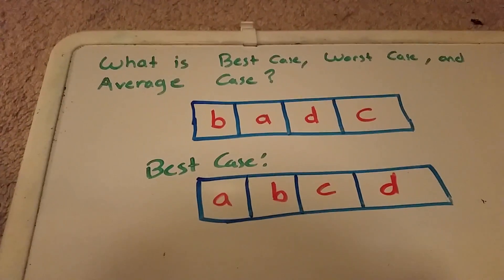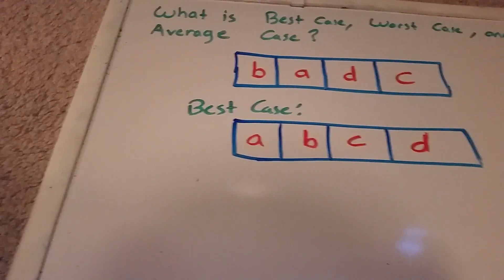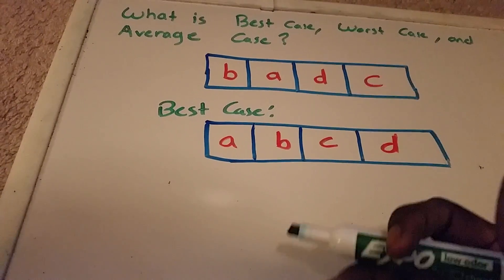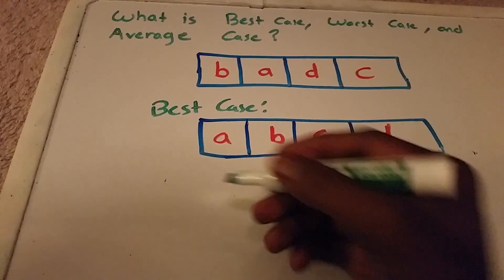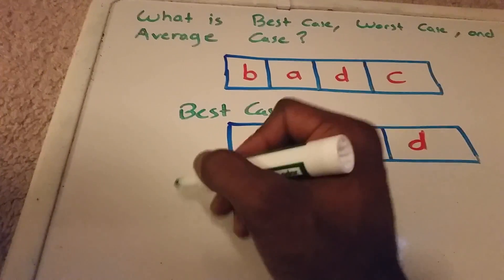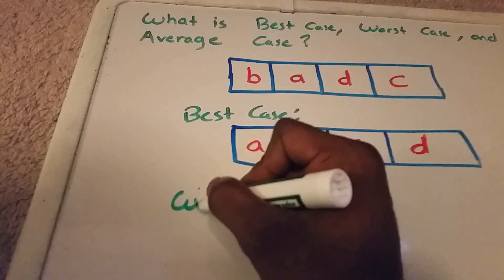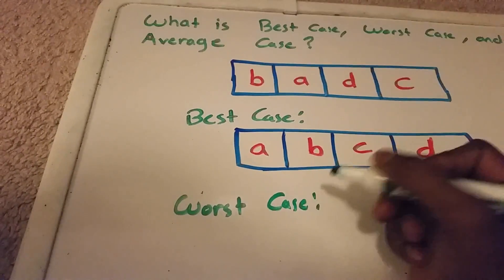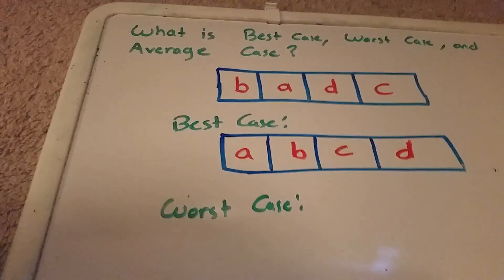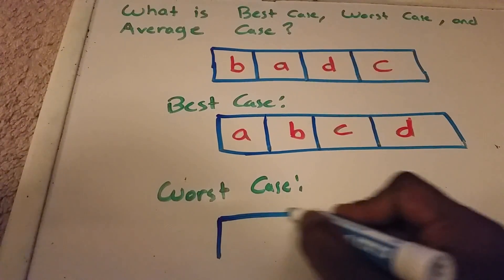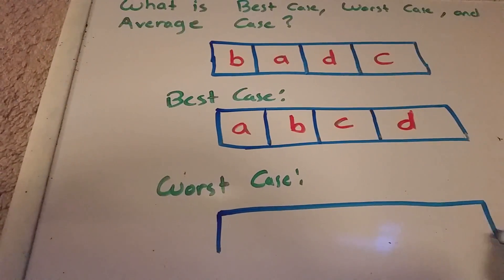Now the average case and the worst case are usually much harder to define. But for this list here, the worst case would be if it's in the complete opposite order that we would like the list to be in.